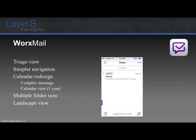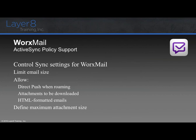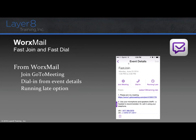Works Mail is a nice productivity email application that supports ActiveSync, supports iOS and Android, has enterprise class security, a very nice native Outlook-like experience, and full inter-application integration. It is MDX secured. We get nice things like a triage view, simpler navigation, a redesigned calendar supporting complex meetings, multiple folder sync, and landscape view.